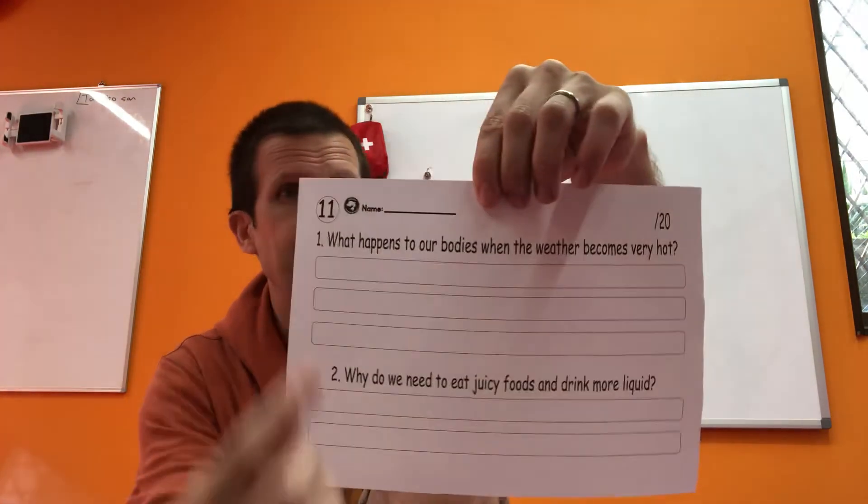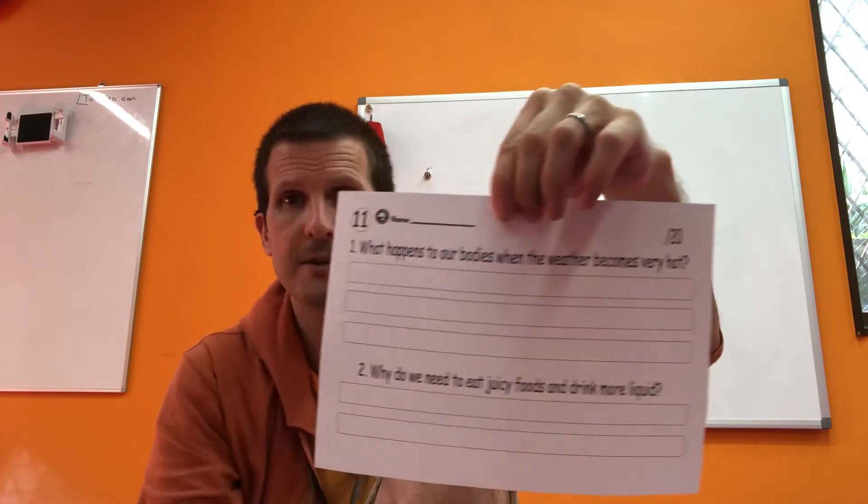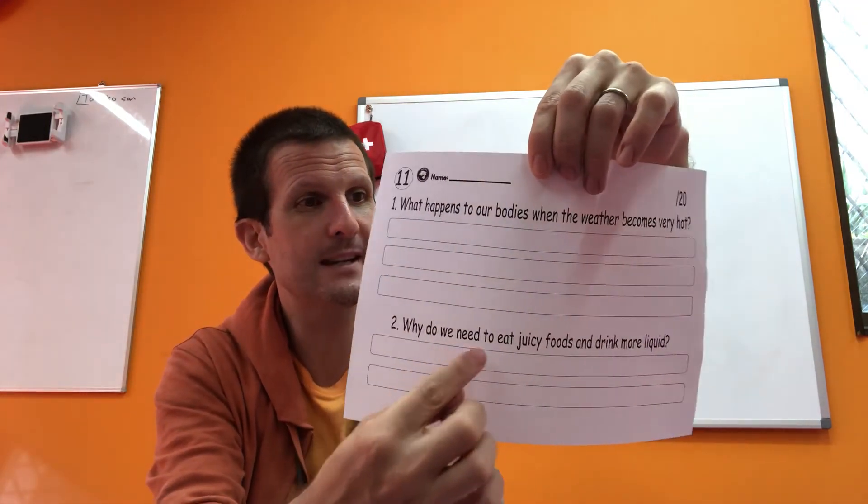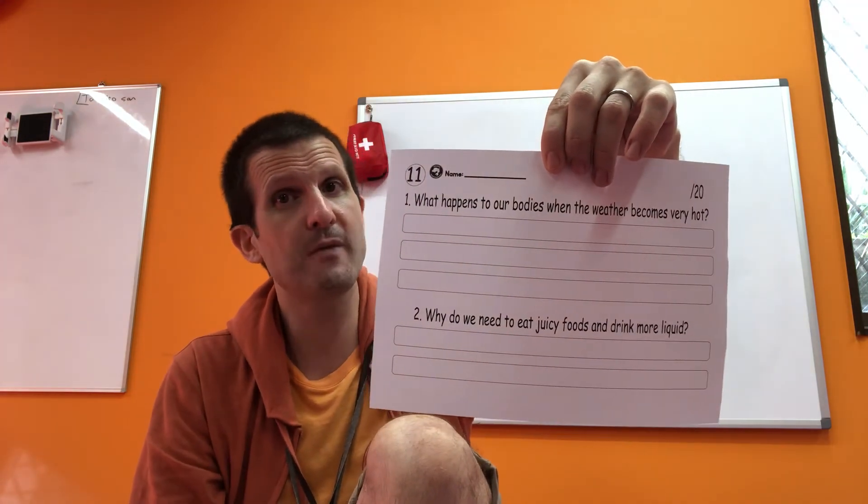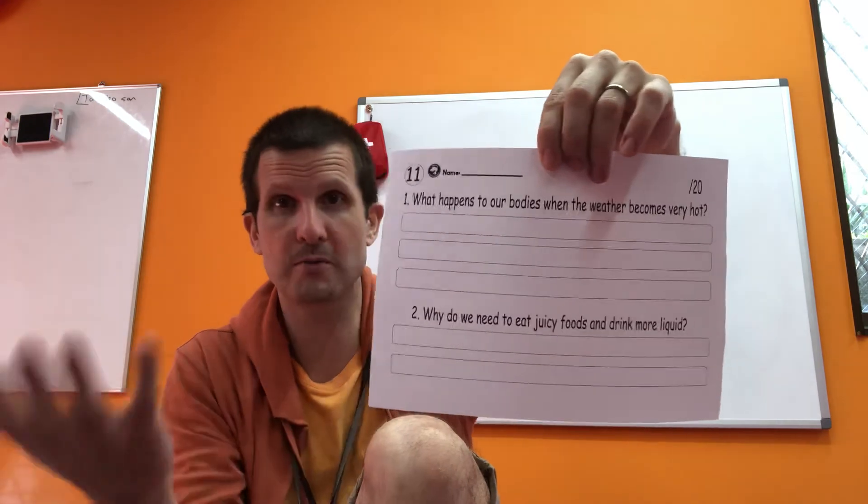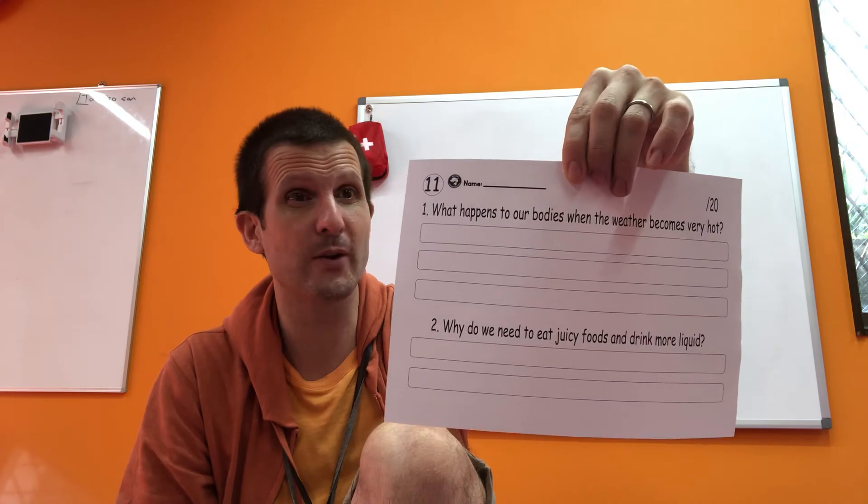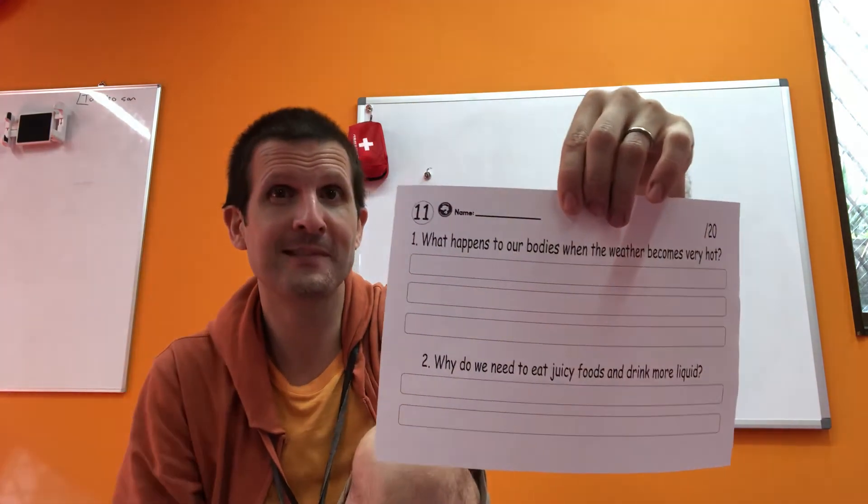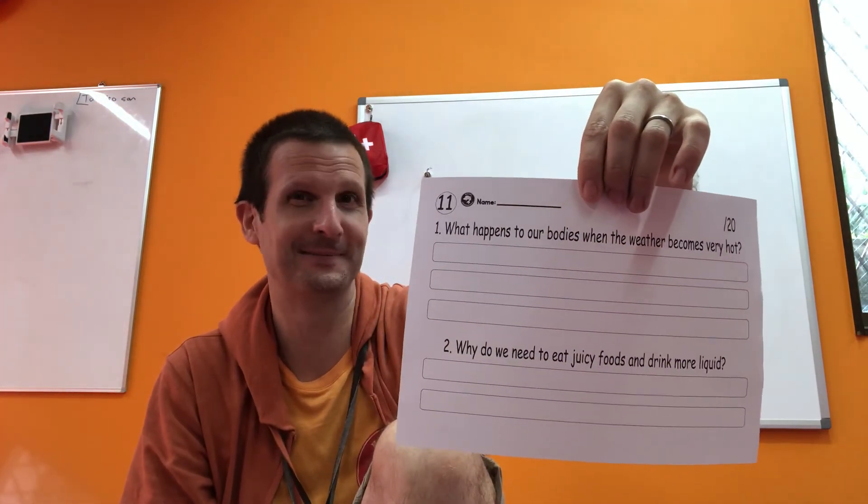And number 11, our last one, a score out of 20 on this one. What happens to our bodies when the weather becomes very hot? Do you remember? Right. And why do we need to eat juicy foods and drink more liquid? Why? Well, juicy foods are full of liquid. And of course, liquids are full of liquid. So, why do you need to drink more of those when your body starts to... Okay? You can think how to word your answer, but I pretty much gave it to you there.